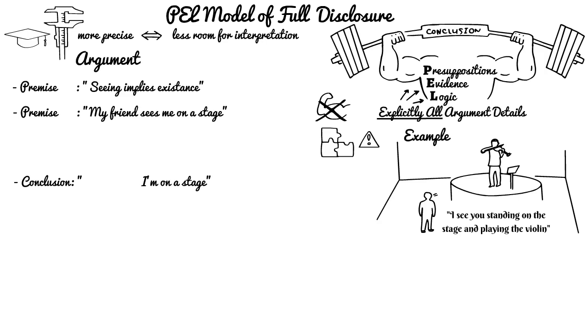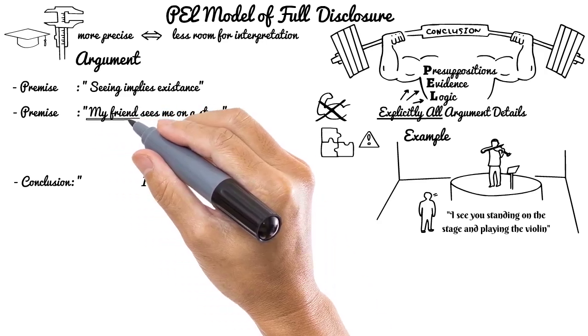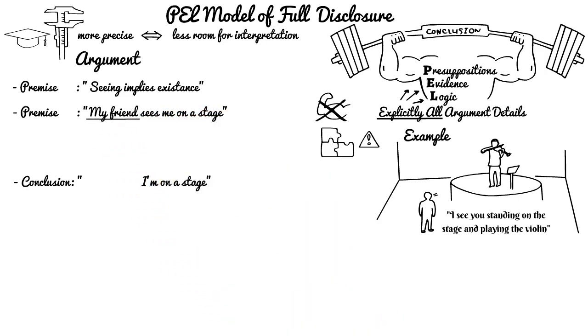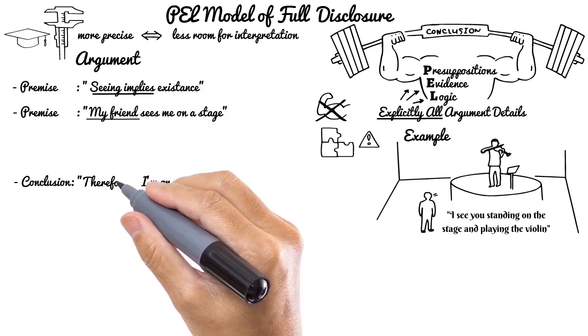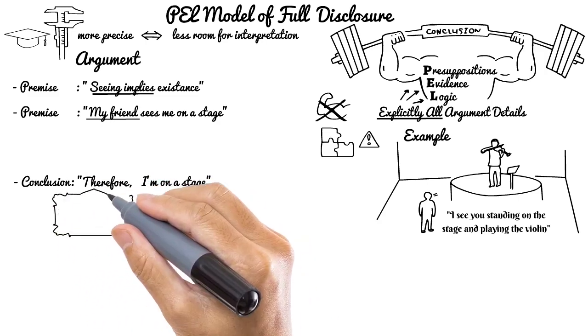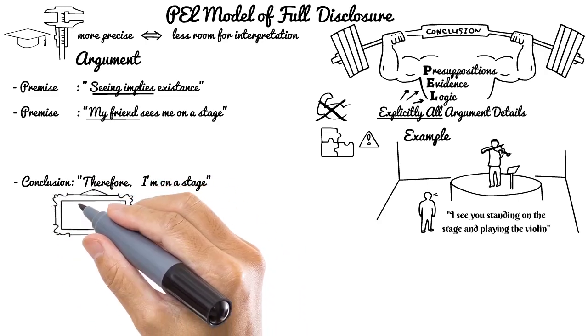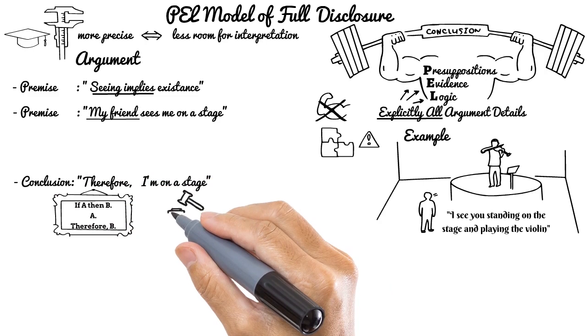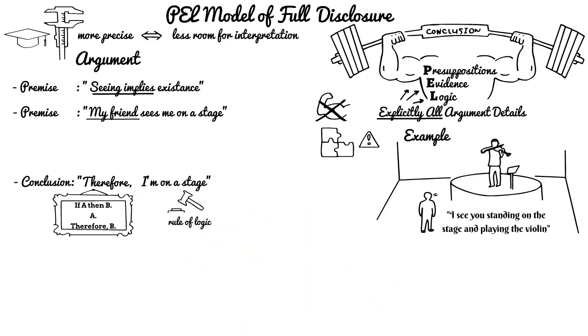This is simply the presupposition that seeing is believing, which we also discussed in previous videos. With the addition of the second premise, the argument now looks this way: My friend sees me on a stage. Seeing implies existence. Therefore, I'm on a stage.